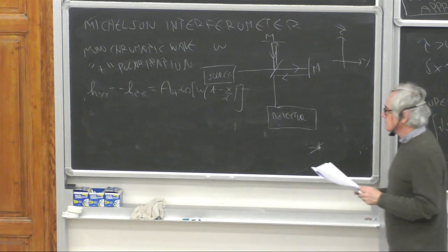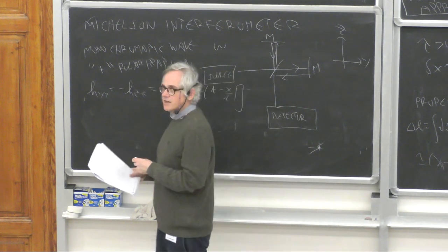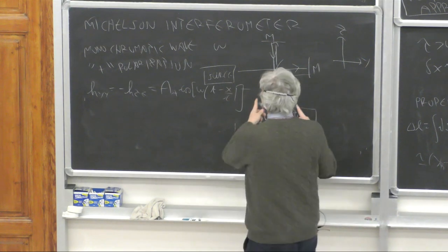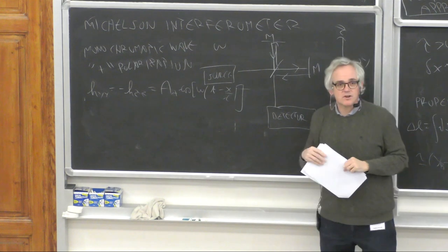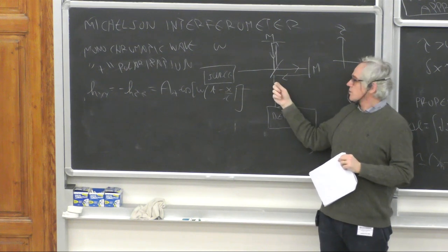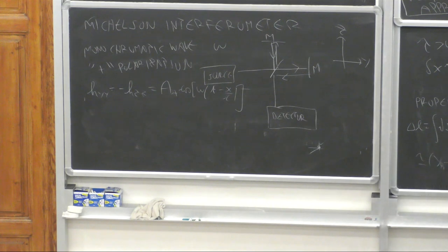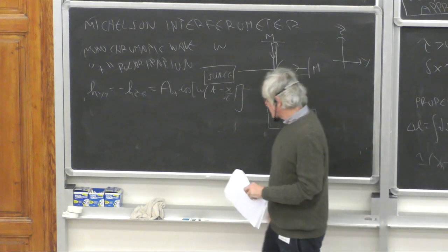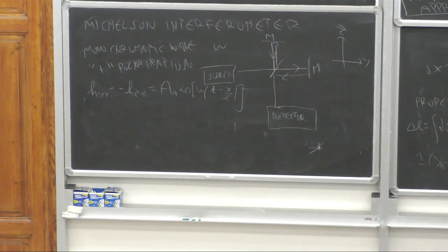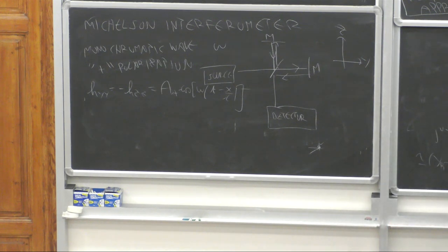Imagine a gravitational wave propagating in the x-direction with the two arms in the y and z planes, a monochromatic wave of frequency ω with plus polarization only. The non-vanishing components are H_yy = −H_zz = H_+ cos(ωT − x/c). When the gravitational wave passes, the length of each arm changes differently, so the path lengths differ, leading to a detectable interference pattern.